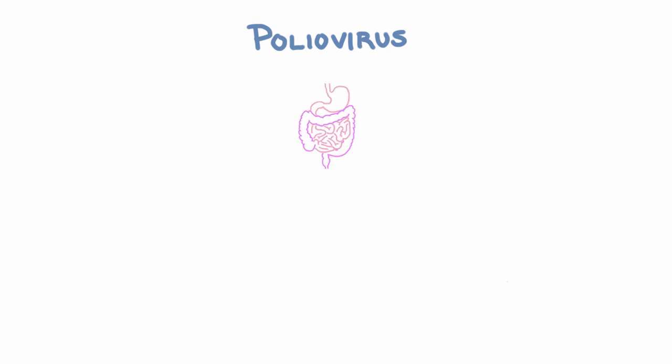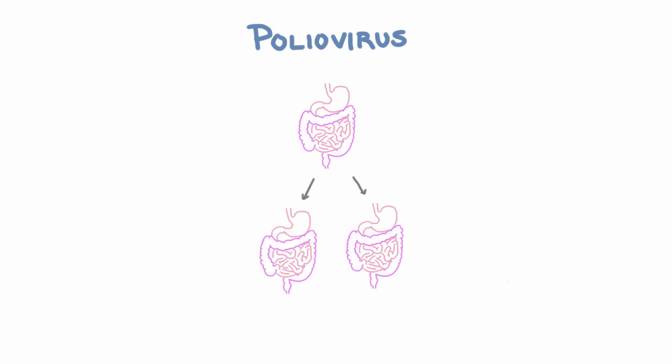Now what do we mean by accident? We mean that infecting neurons doesn't help poliovirus survive. To survive, poliovirus wants to infect people and then get transmitted to more people, and that's all done through the gut and through fecal-oral transmission. So the neuronal infection and the paralysis — that's all a side effect that doesn't help the virus.